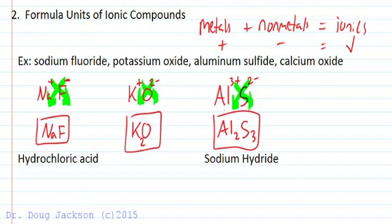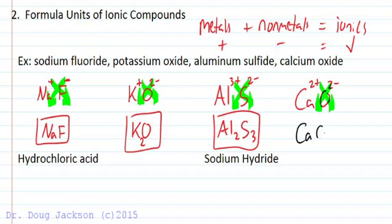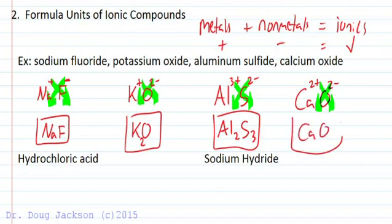Calcium oxide is a little trickier. By our method, calcium is two plus and oxygen is two minus — two goes here, two goes here. But we can simplify: instead of writing Ca₂O₂, we divide by two and get one each — just CaO, calcium oxide. When we can simplify, we do. We have to get whole numbers by Dalton's atomic theory.